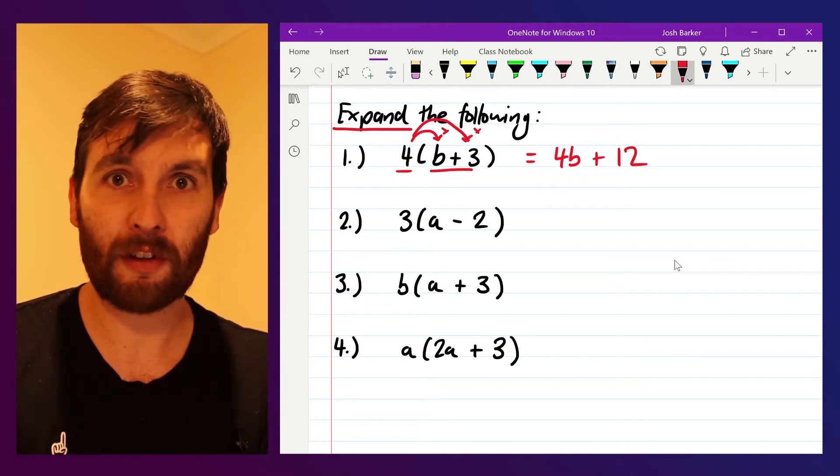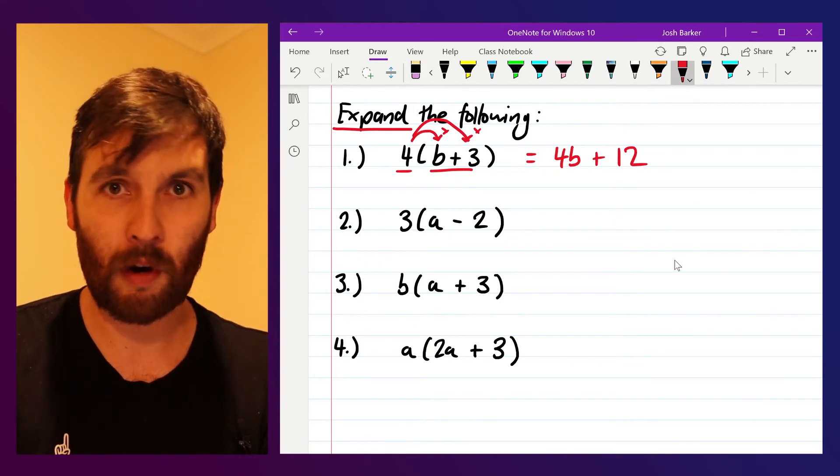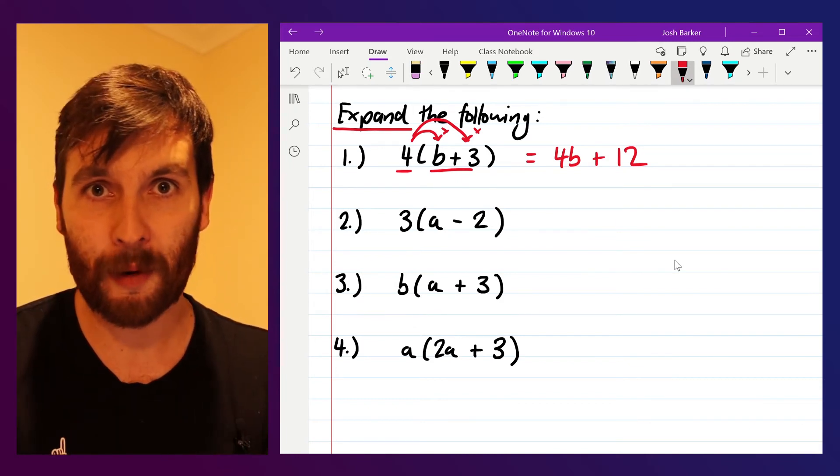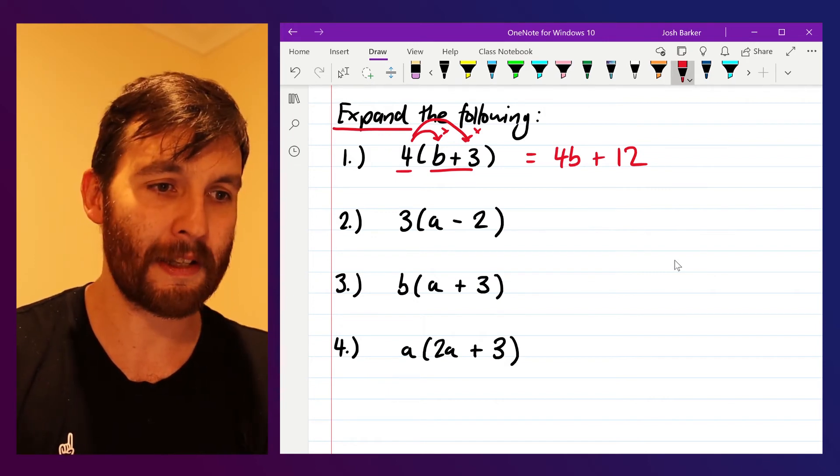So those expressions are equivalent to each other, but on the left-hand side it's in brackets, it's in what we call factorized form, and on the right-hand side we've got rid of the brackets, it's now in expanded form. So we've written something that's equivalent but we've taken those brackets away.